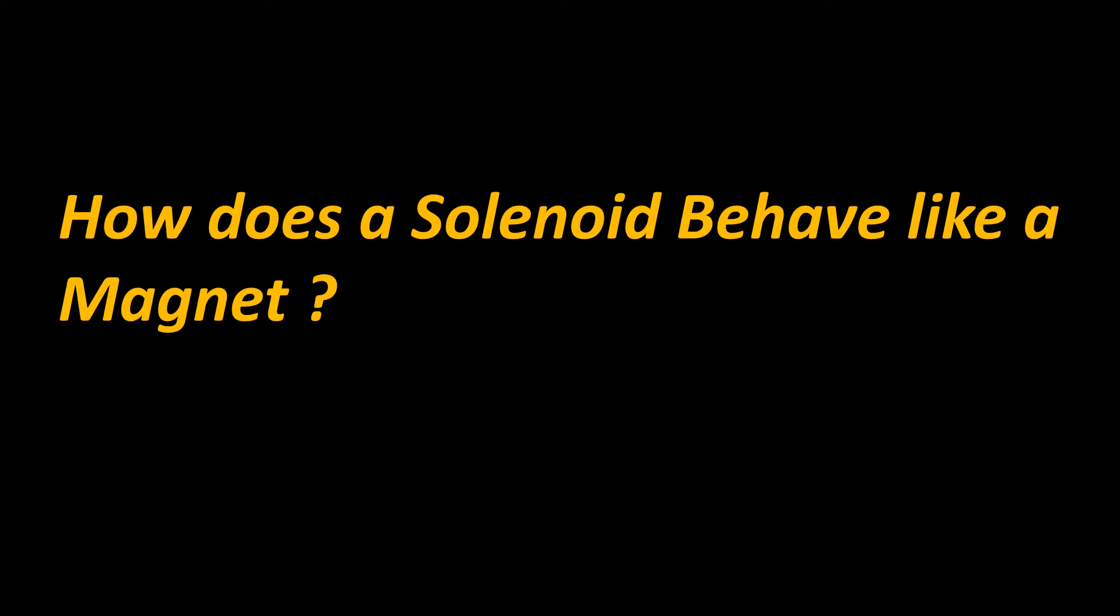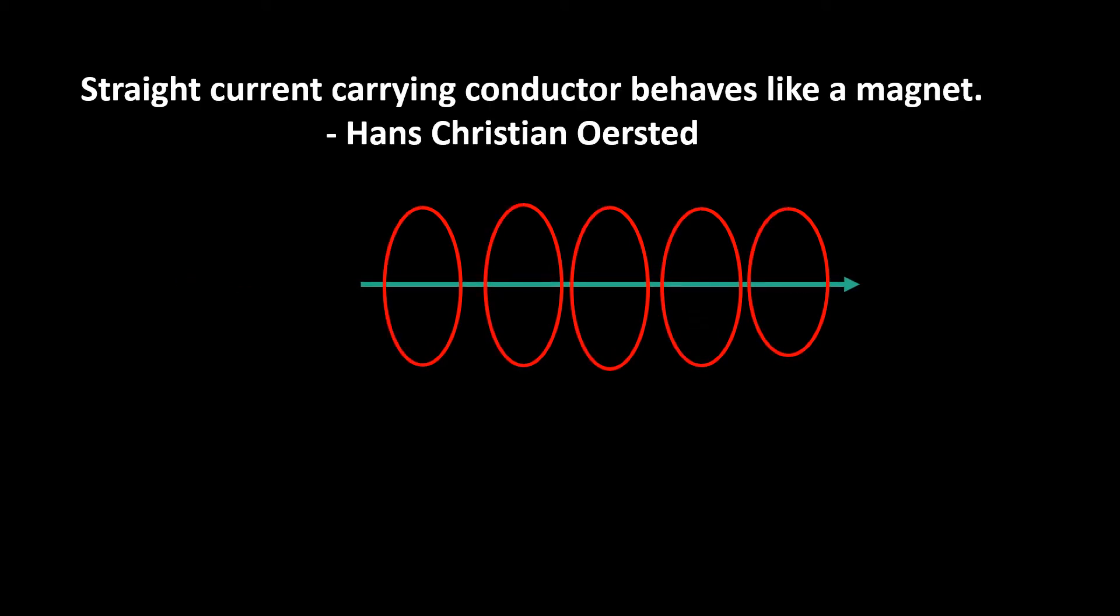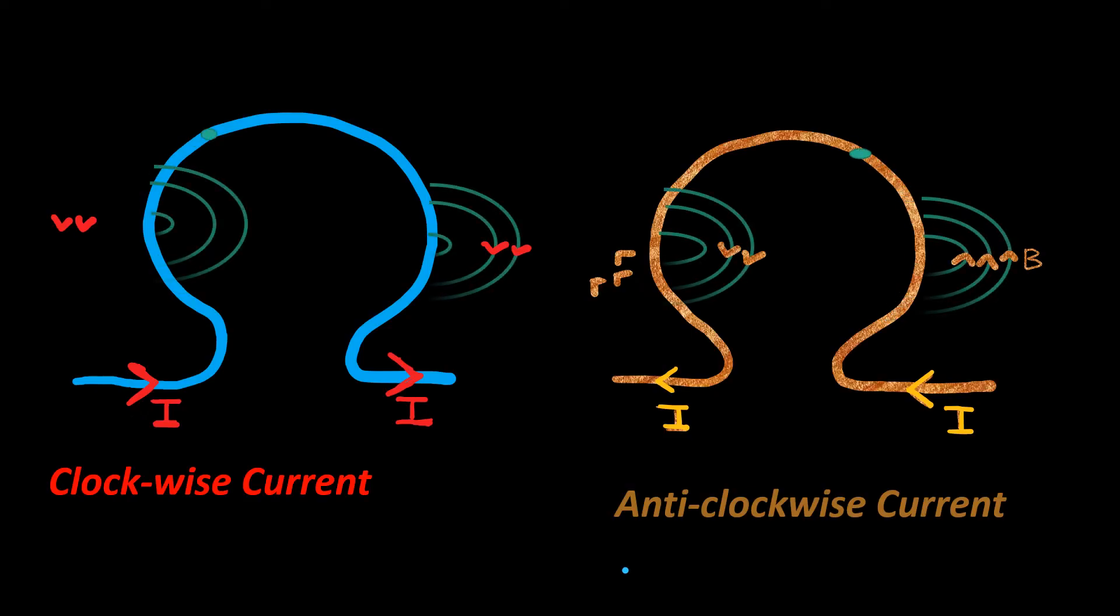How does a solenoid behave like a magnet? A straight current carrying conductor sets up magnetic field around it. When it is bent in form of a loop, the loop carrying current sets up magnetic poles, that is north pole and south pole.